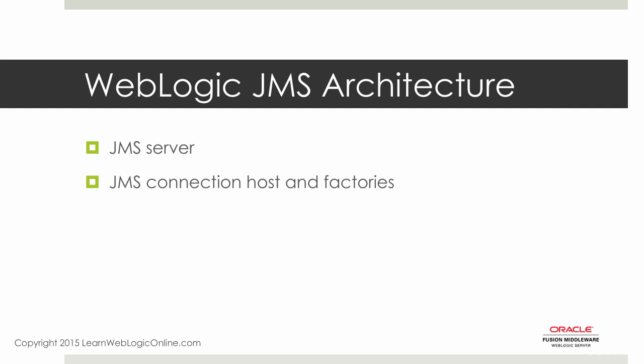A JMS connection factory is important because it gives the client its connection to either produce or consume messages. Then there are JMS destinations, which hold JMS messages. There are two types: JMS queues and topics, which I'll cover in detail later. Another component specific to WebLogic is the JMS module, used to hold configuration for JMS resources such as connection factories, queues, and topics. A JMS module is represented by an XML file on the file system, as you'll see in the lab.